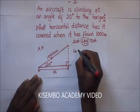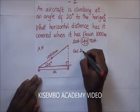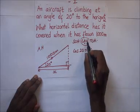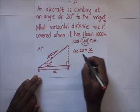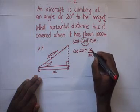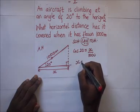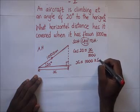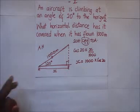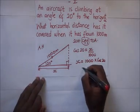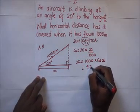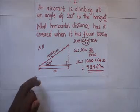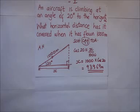So we say that cosine of 20 degrees is equal to adjacent — which is X — over hypotenuse, which is 1000. Making X the subject of the formula, it's going to be 1000 times cosine of 20. 1000 times cosine of 20 gives us 939.69 meters. So that will be the horizontal distance this aircraft will have traveled.